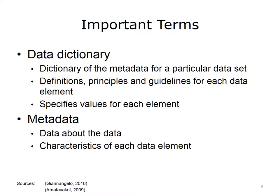Standardized data sets have a data dictionary that contains the metadata — that is, the data about each data element — so that users know what each data element means. For each data element, the data dictionary contains information such as the definition, principles, and guidelines, the values, format, and synonyms. The specification for the values will include how many characters are in the data field, and if the characters use letters from the alphabet or numbers, or perhaps alphanumeric, which would use both numbers and alphabet letters.